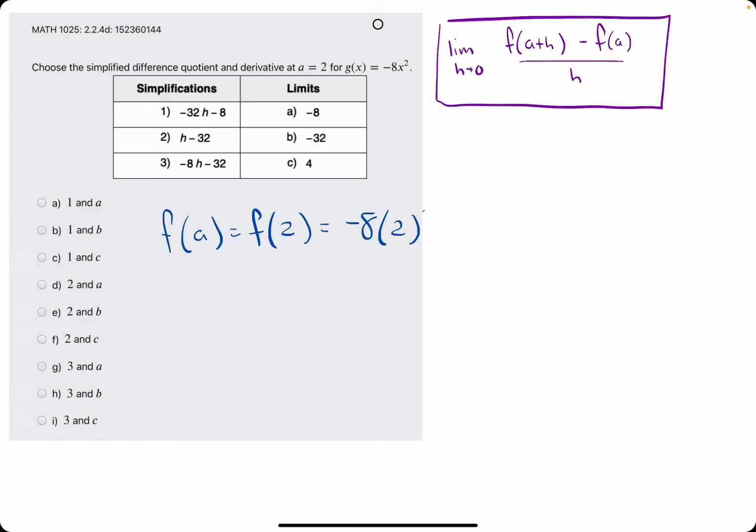So negative 8 times 2 squared. Negative 8 times 4 is negative 32. That's f of a.